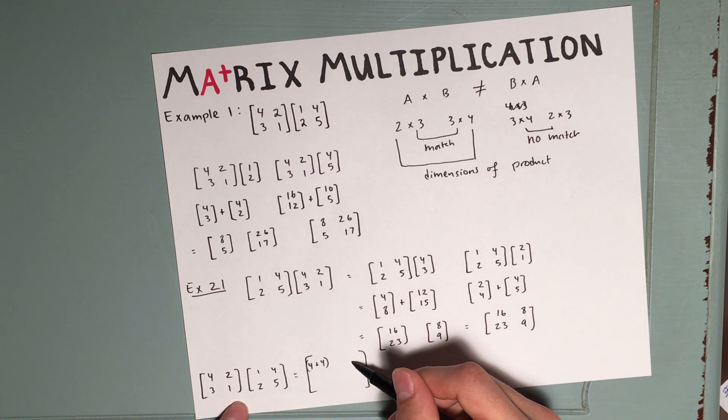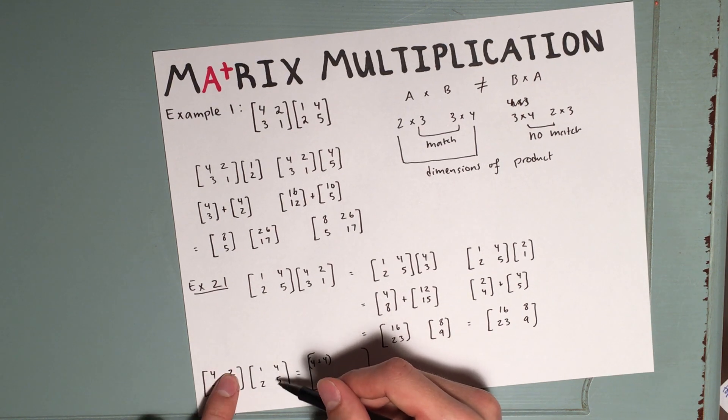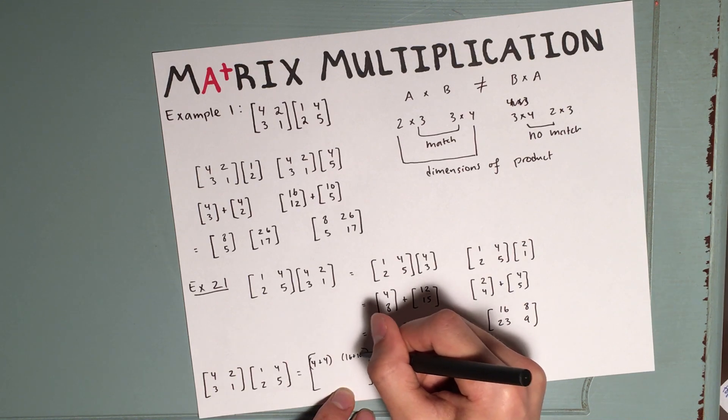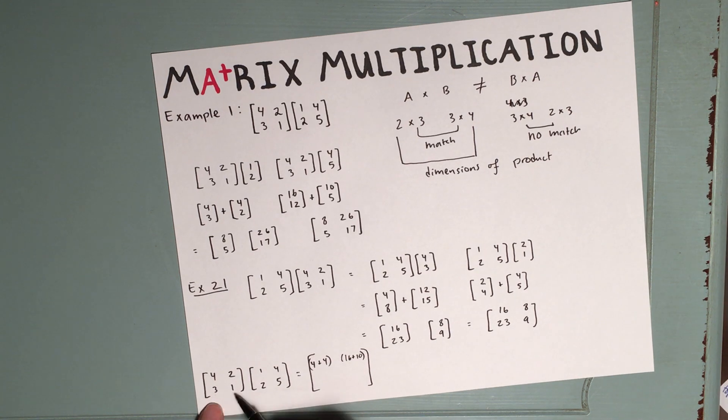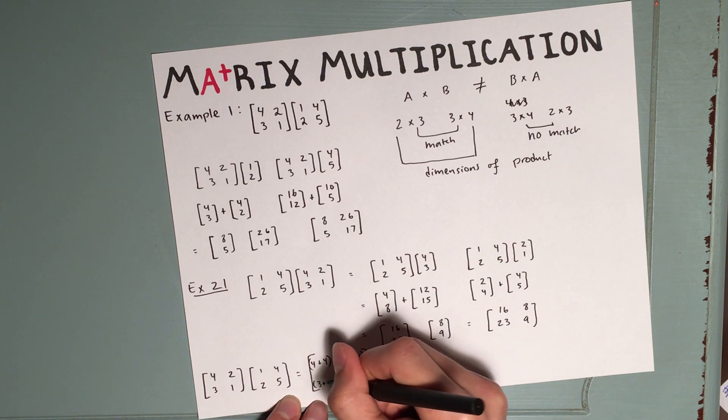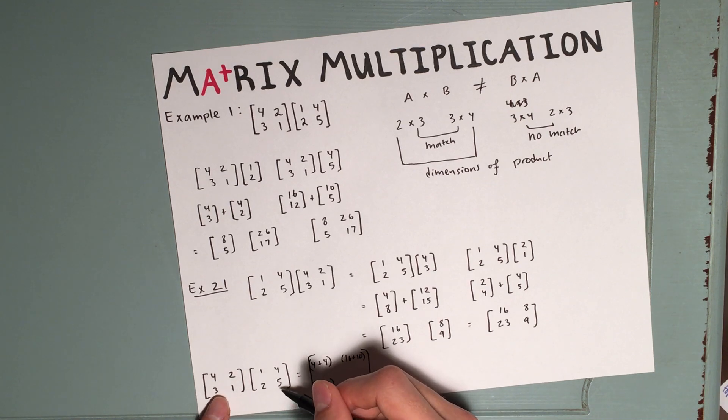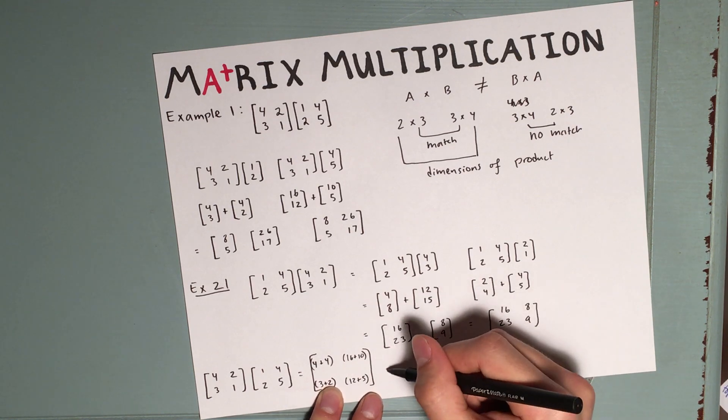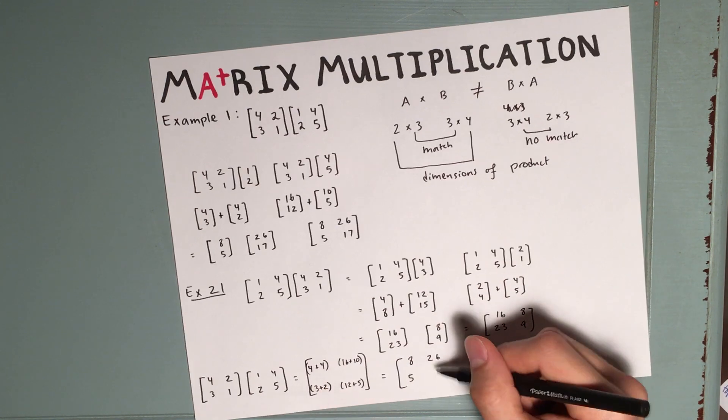Now, for this first row, second column, we take the first row, second column, and we get 4 times 4 plus 2 times 5. So that's going to be 16 plus 10. For the second column, we go second column, first row, second column, first row, which is going to be 3 plus 2. For the second row, second column, we have second row, second column, 12 plus 5. Of course, this is going to give us the same answer of 8, 26, 5, 17.